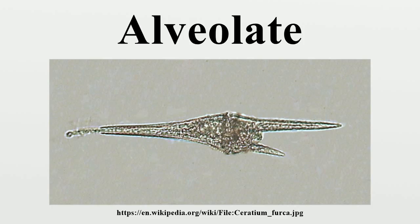The Alveolata consist of myzozoa, ciliates, and colponemids. It seems likely that the common ancestor of the myzozoa was a myzoocytotic predator with two heterodynamic flagella, micropores, trichocysts, rhoptries, micronemes, a polar ring, and a coiled open-sided conoid.